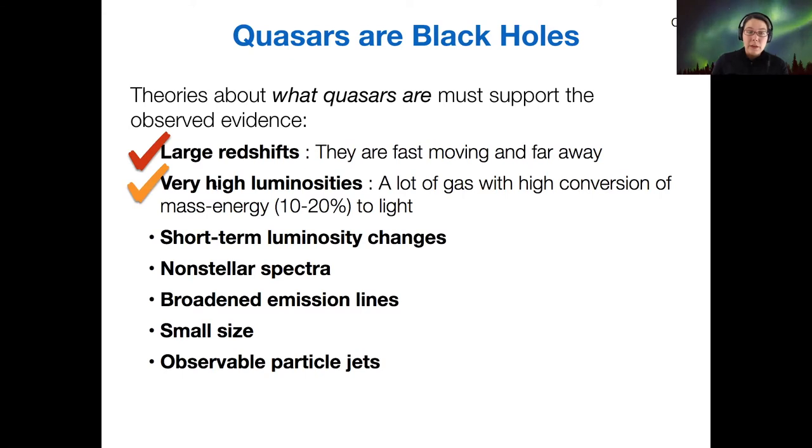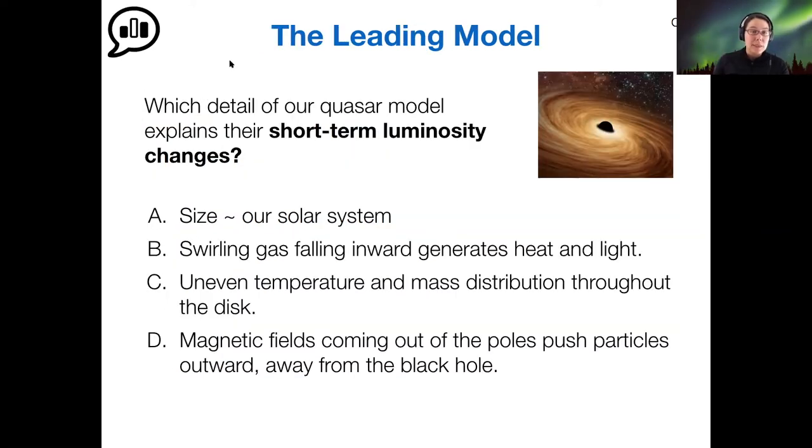So we've got our very high luminosities. It turns out that it's very efficient to generate light in this type of system. And now we need to also understand why does that luminosity change over short timescales? What is the best explanation of that short-term luminosity changes?